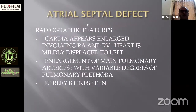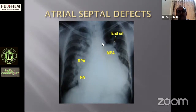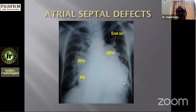In ASD, the heart appears enlarged involving the right atrium and ventricle, and is mildly displaced to the left. There is enlargement of the main pulmonary artery with variable degrees of pulmonary plethora. Costophrenic septal edema is manifested as Kerley B-lines. On chest radiograph we see cardiomegaly with enlarged right atrial and ventricular chambers, dilated pulmonary arteries including the main pulmonary artery, dilated central, lobar, segmental, and peripheral pulmonary arteries, and a rounded, upward-displaced cardiac apex.